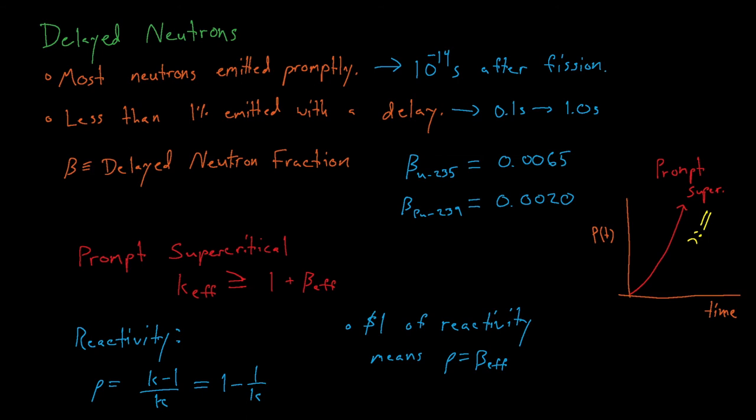These dollar and cent terms were actually developed by scientists at Los Alamos during the Manhattan Project. Just like the terms barns or shakes, dollars and cents were used so that the scientists could go to bars, restaurants, or other public places and keep discussing work, as nuclear engineers tend to do, without revealing classified topics.